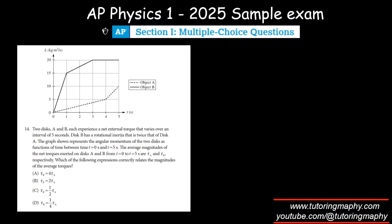All right guys, another question on rotation. We are given that there are two discs A and B, and each experiences a net external torque that varies over an interval of five seconds. Disc B has a rotational inertia that is twice that of disc A. The graph shows the angular momentum L of these two discs